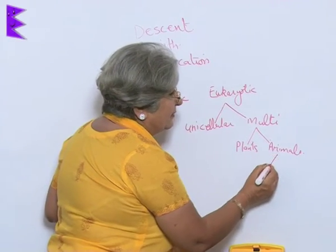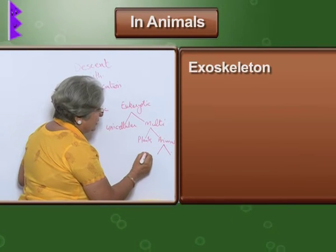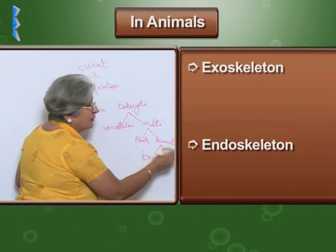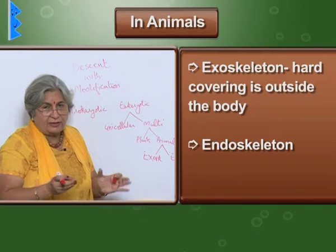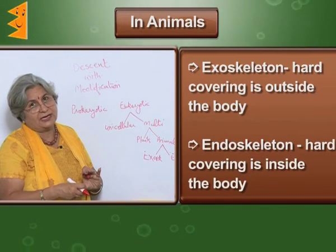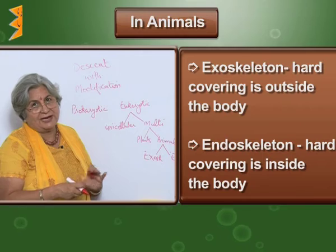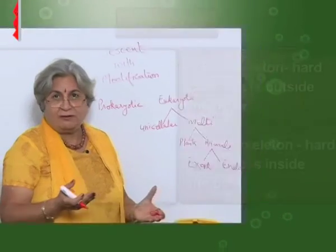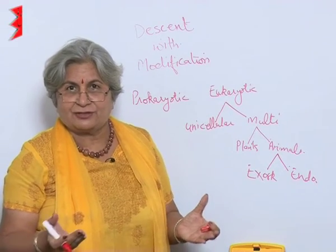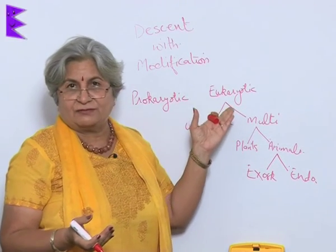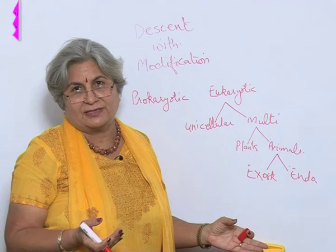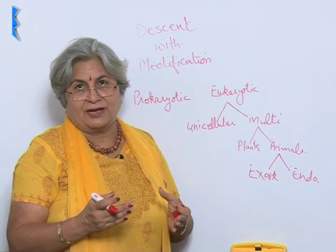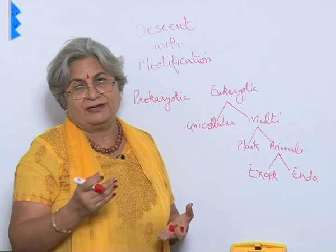Among animals, there can be an exoskeleton or endoskeleton — whether the hard covering is outside the body or the hard skeleton is inside the body. That will determine whether they are vertebrates or invertebrates. So, is a hierarchy getting established? The simplest organisms were at the base and then the more complex. This is how we are able to classify on the basis of evolutionary tendencies.